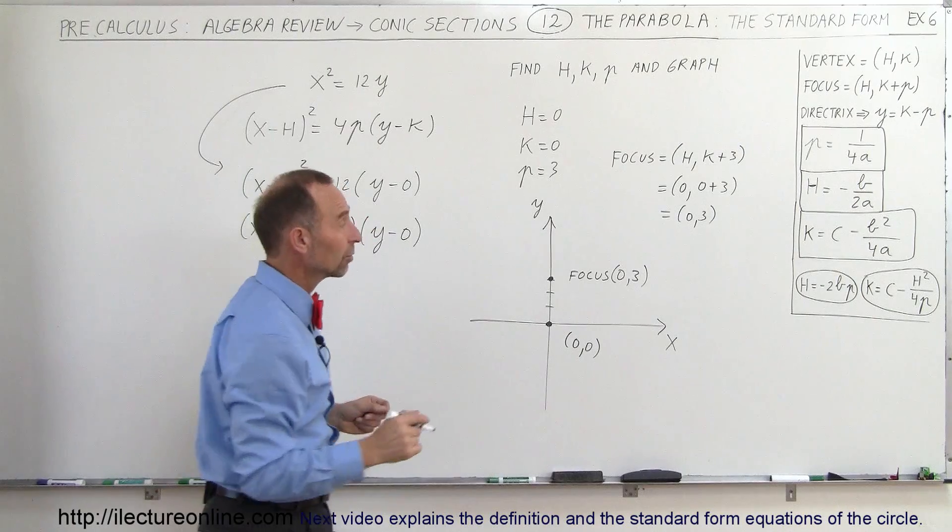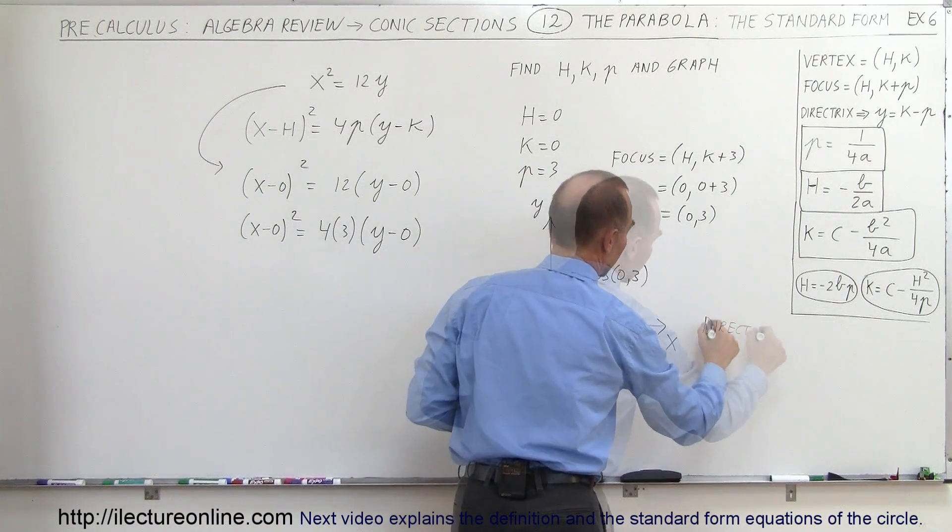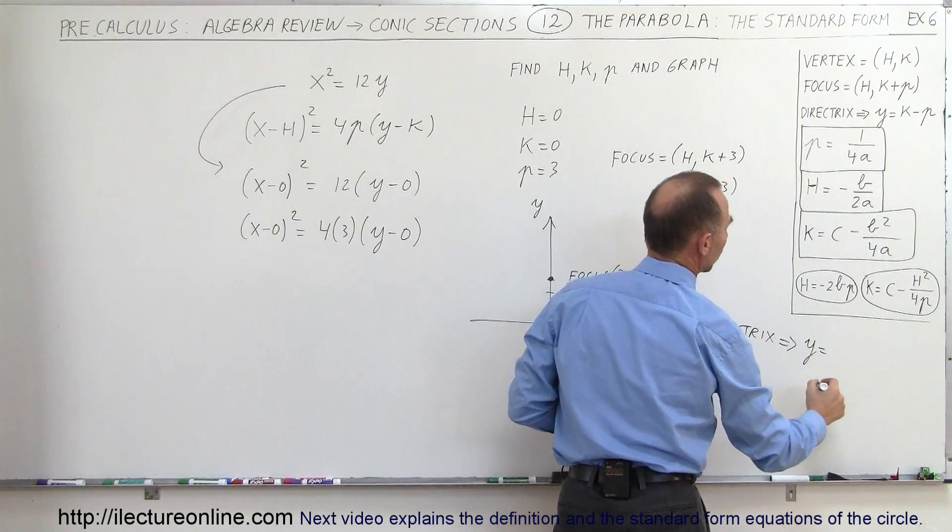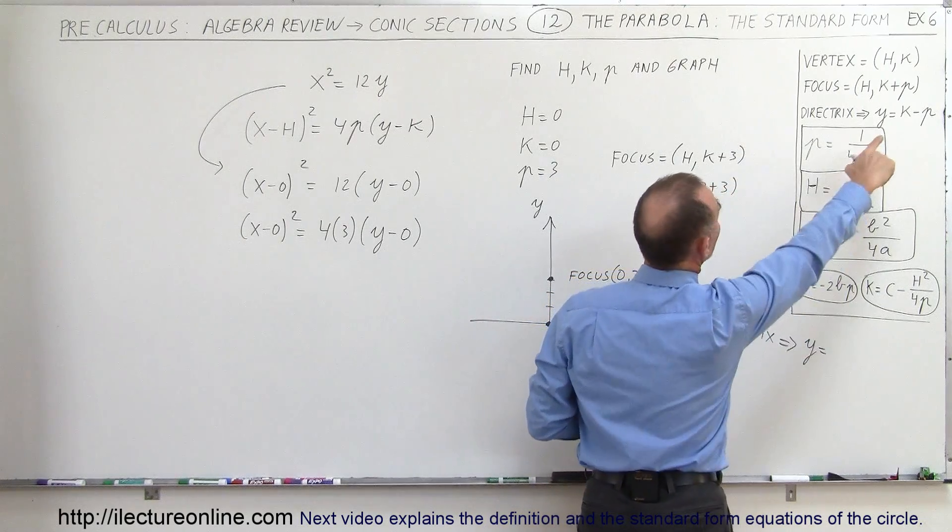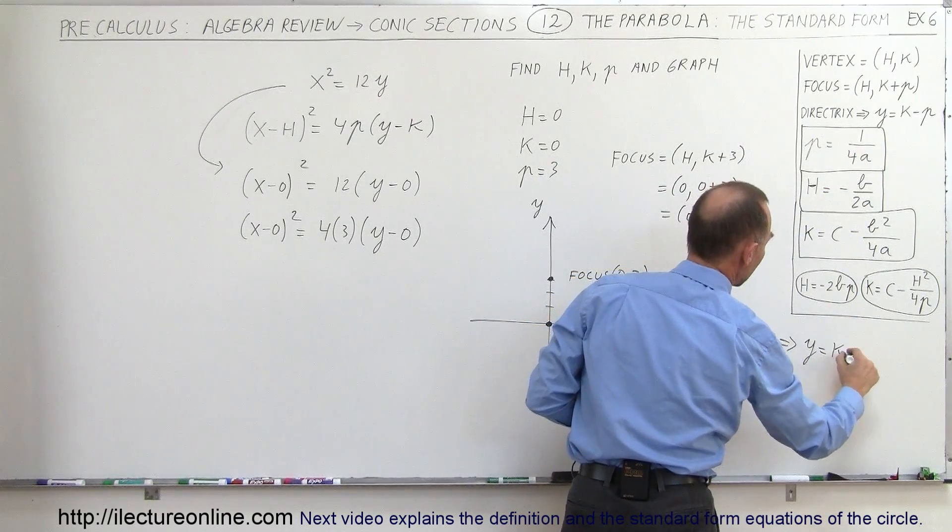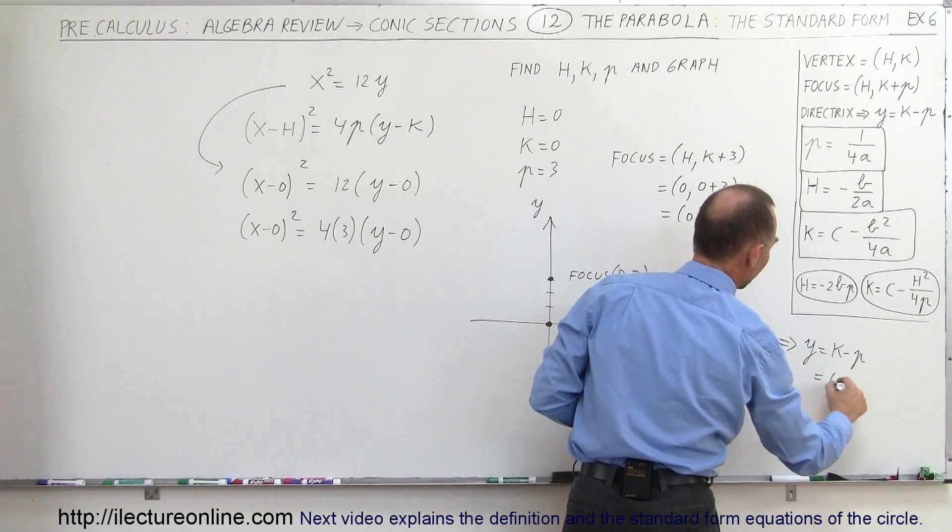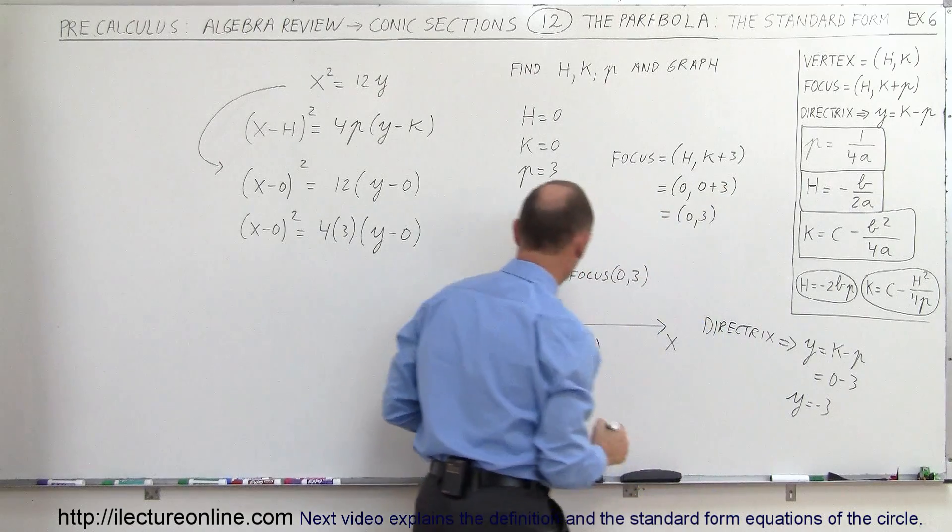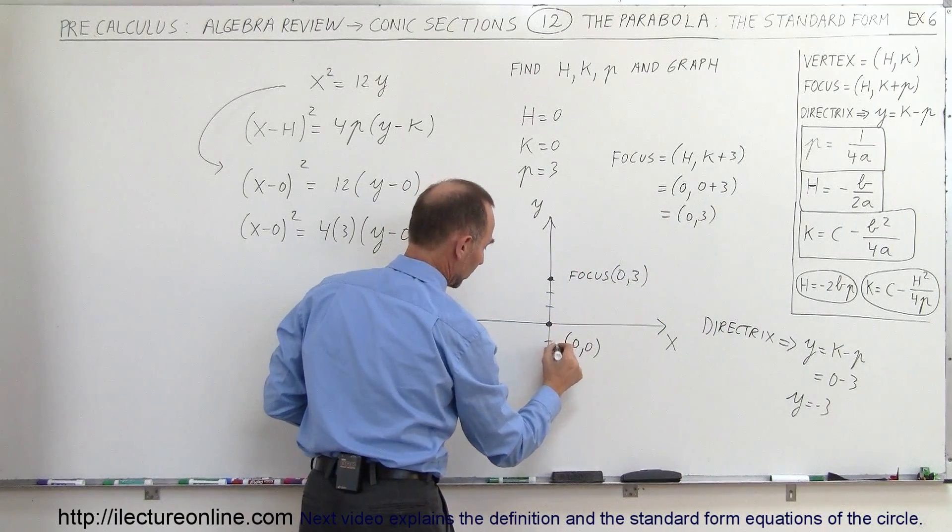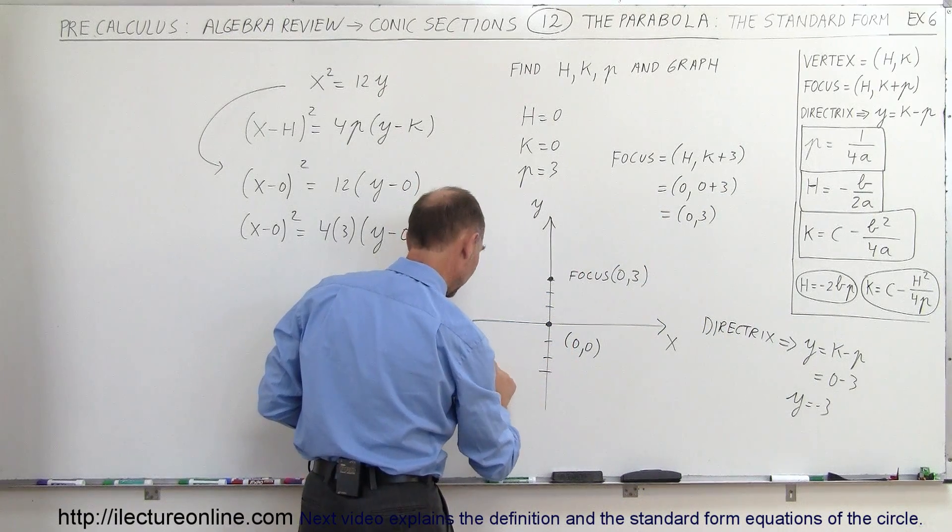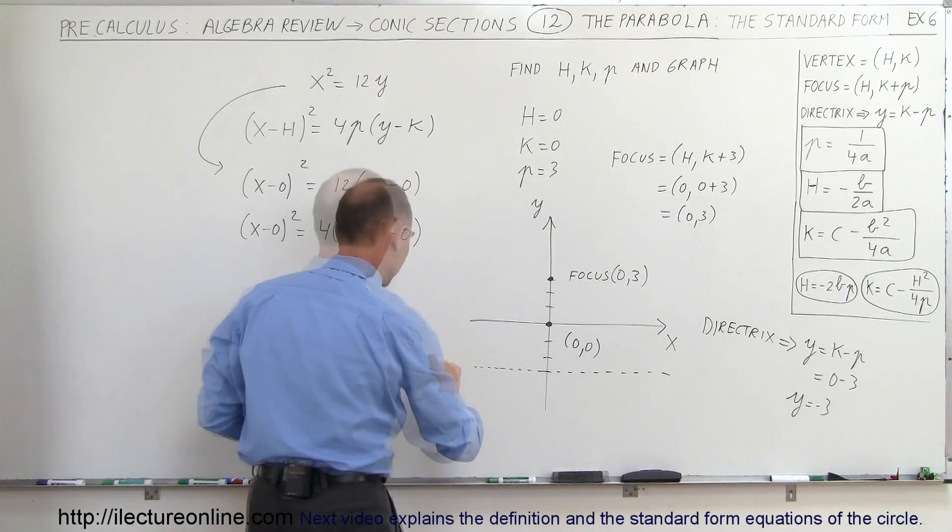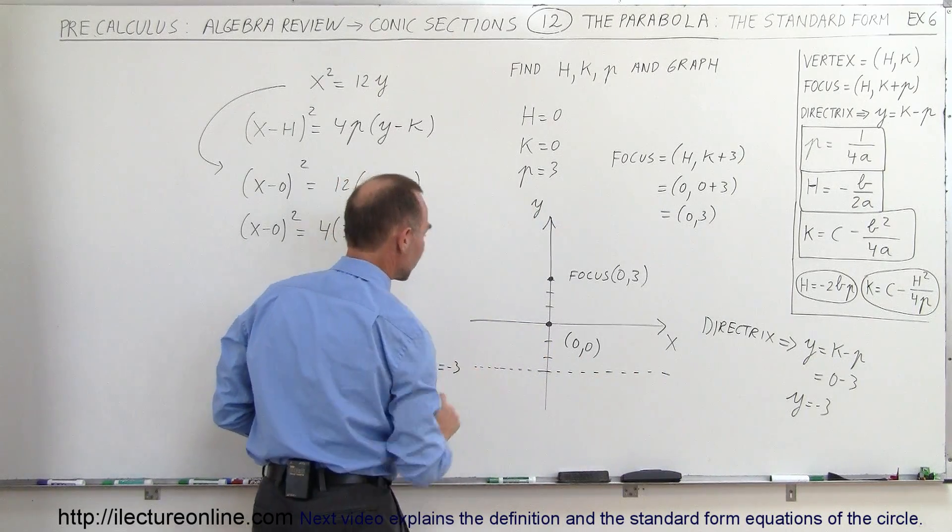Now my directrix. My directrix can be found by taking the equation y equals k minus p. So in this case, that's 0 minus 3, or y equals minus 3. So y equals minus 3 is down here, 1, 2, 3. So this dashed line represents the directrix and the equation y equals minus 3.